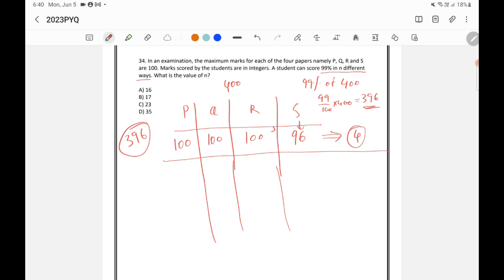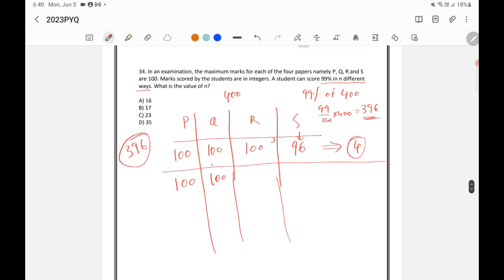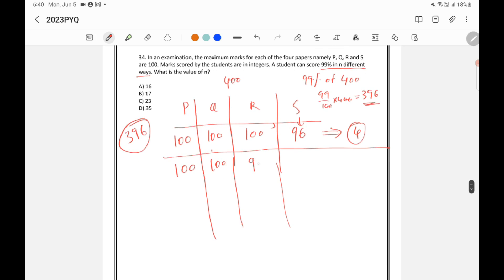Now let's take the next combination possible. So let's say in 2 papers, he got 100. And in the next paper, he got 99. And in the other paper, he got 97. So this is a possibility. If you add all these things, you will get 396.